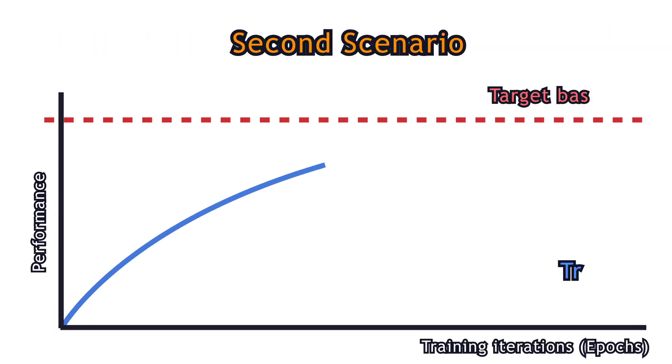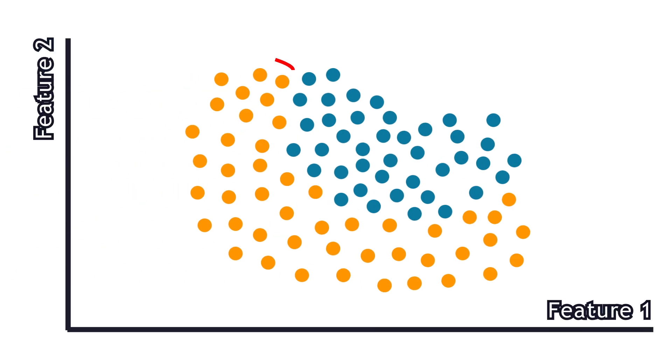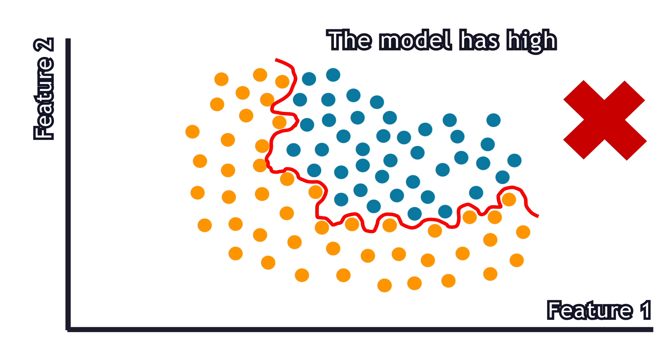Secondly, you get nice performance on your training data, but the model fails to perform well on the validation data. In other words, you get a huge gap between training and validation performances. This is called overfitting. This happens when the model learns unnecessary parts of the training data which do not apply to other data. In this scenario, we say the model has high variance.